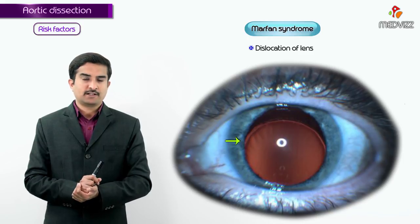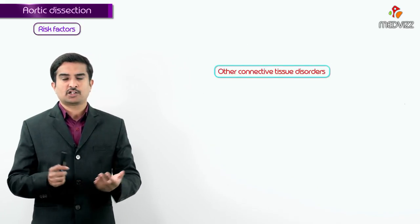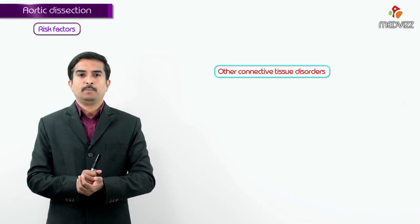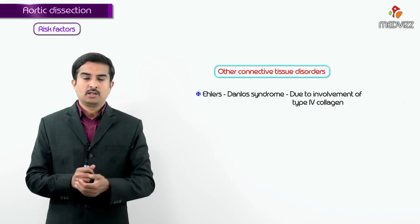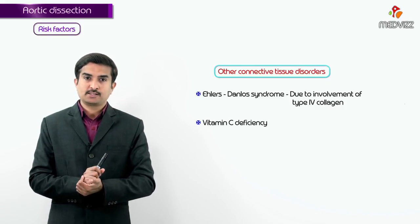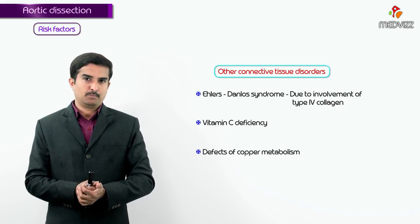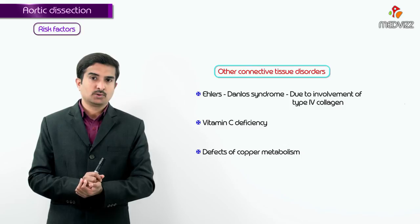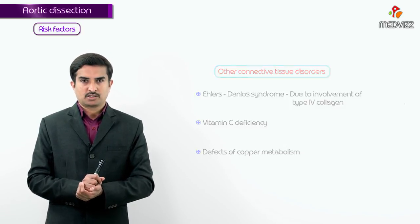Other connective tissue disorders responsible for aortic dissection include Ehlers-Danlos syndrome, due to involvement of type 4 collagen, vitamin C deficiency, and defects of copper metabolism. In all these individuals, aortic dissection can occur but in rare conditions.